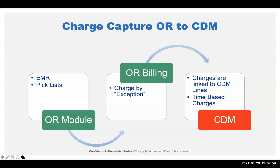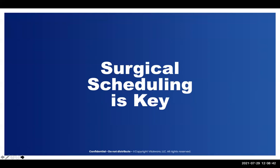This is where it's drastically different from the rest of the house. With house charges, if you do a procedure or a lac repair, you charge a lac repair. If you get a splint, you charge a splint. The OR charges by exception, because PIC lists have a number of items the physician feels are necessary for the procedure. So they charge only what they didn't use — it's a complete reversal of normal thinking. Normally we charge what we do; here we're charging the things we didn't use. Those charges then go to the CDM along with time-based procedure charges.